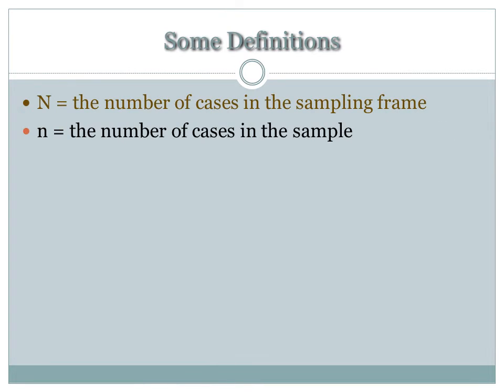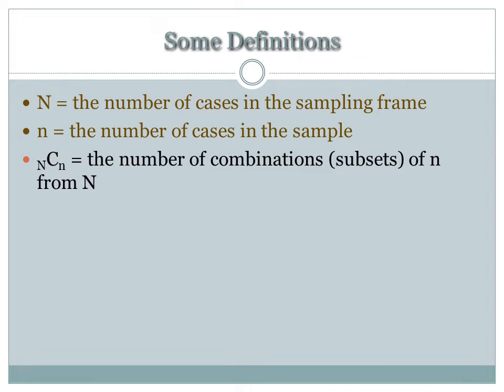Before we talk about different types of probability sampling, some quick definitions. We use a capital N to signify the number of cases in the sampling frame. We discussed what a sampling frame is when we talked about the different groups in a study. We use a small lowercase n to signify the number of cases that are in your sample. The combination formula, this is simple probability statistics, tells us the number of combinations of the sample that we can select from a sampling frame. Finally, there's a sampling fraction. The sampling fraction is quite simply the number of cases in your sample divided by the number of cases in your sampling frame.